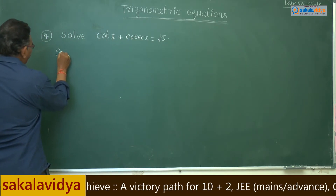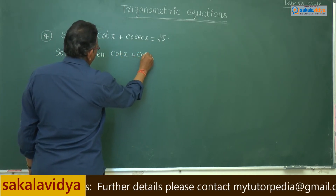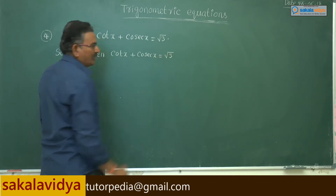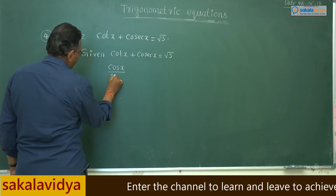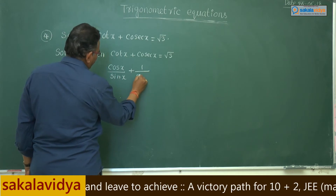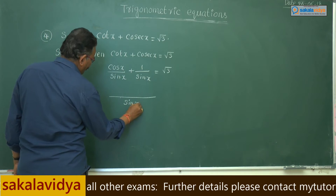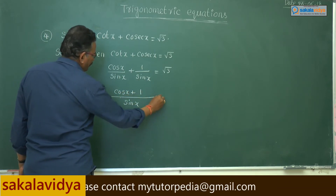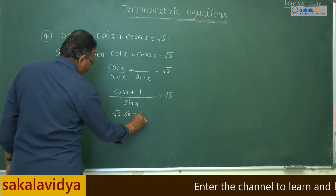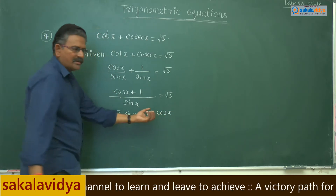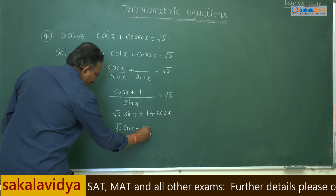Let us start the solution. Given cot x plus cosecant x equals root 3. We know cot x can be written as cos x divided by sin x, and cosecant x is 1 by sin x, so we get cos x by sin x plus 1 by sin x equals root 3. The LCM is sin x, so cos x plus 1 equals root 3 sin x after cross multiplying.